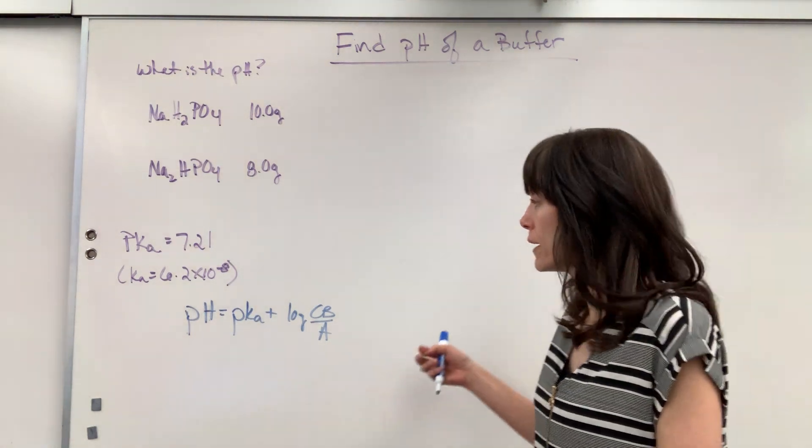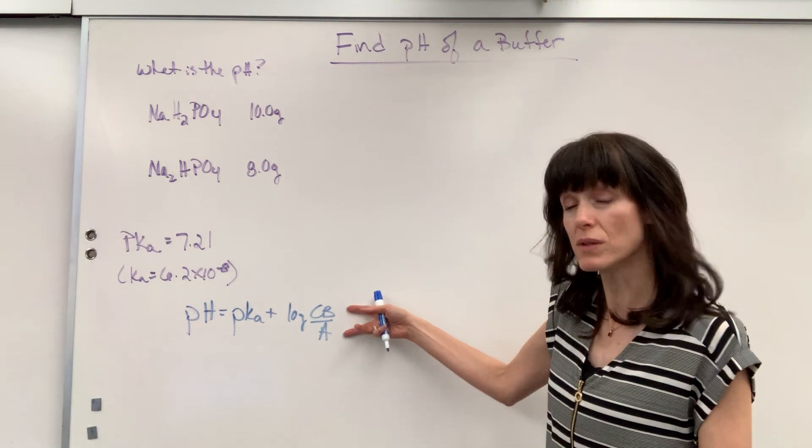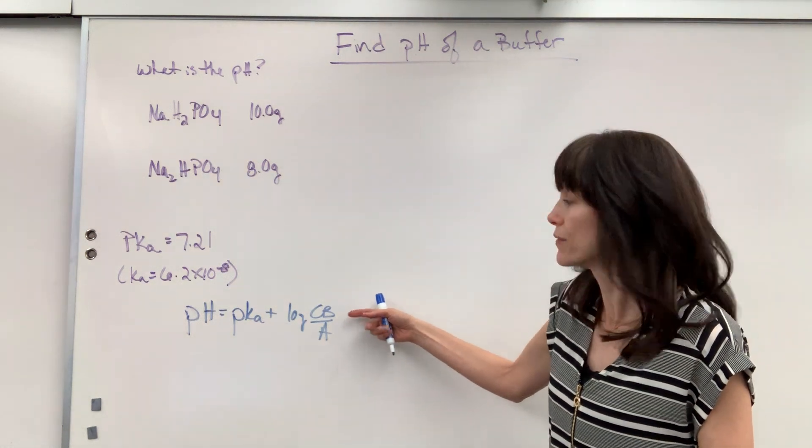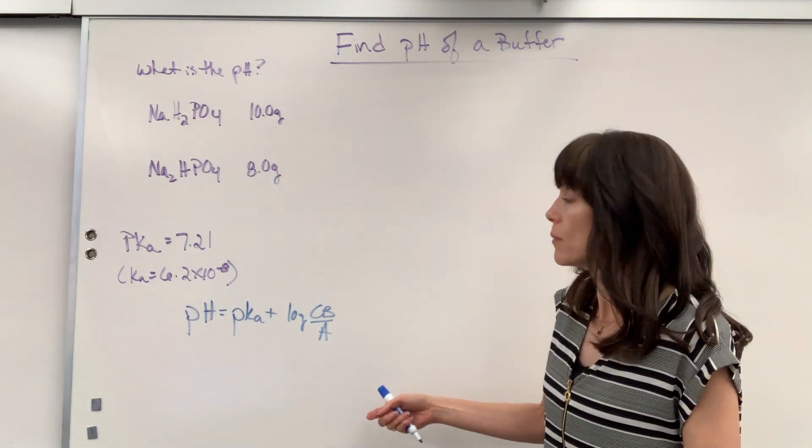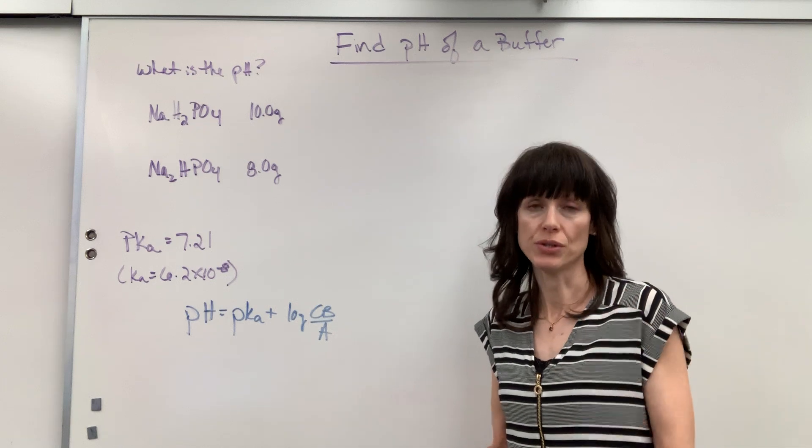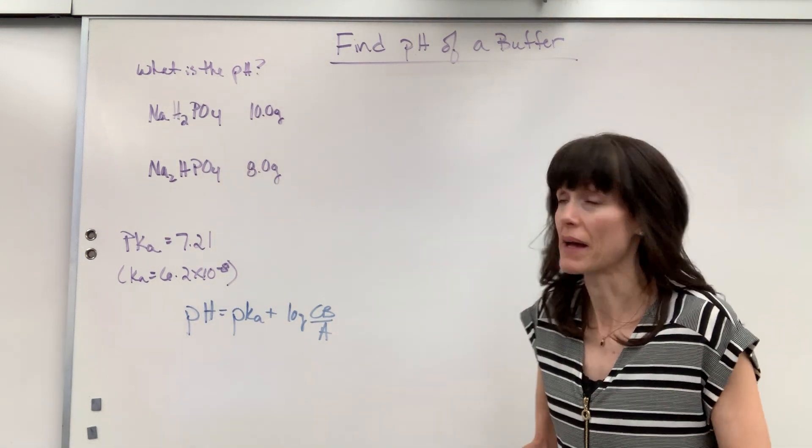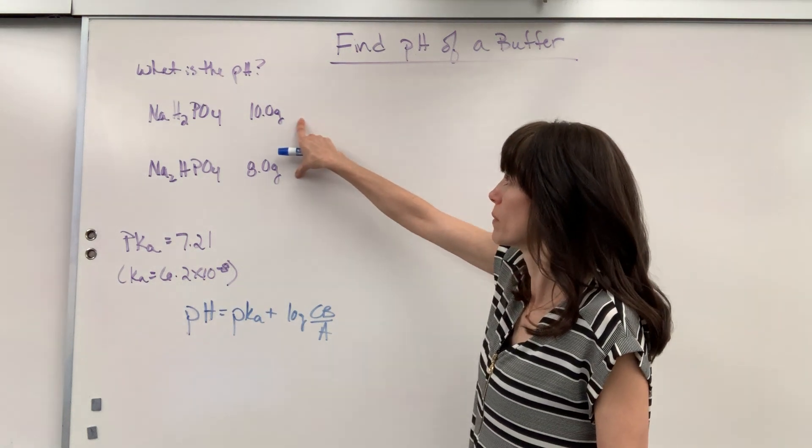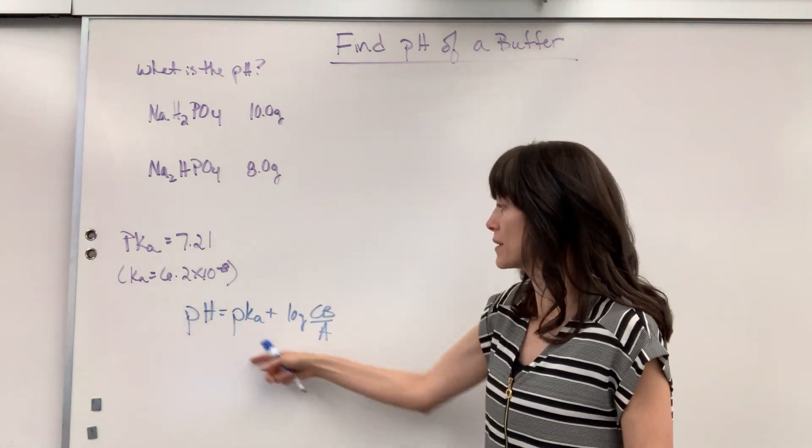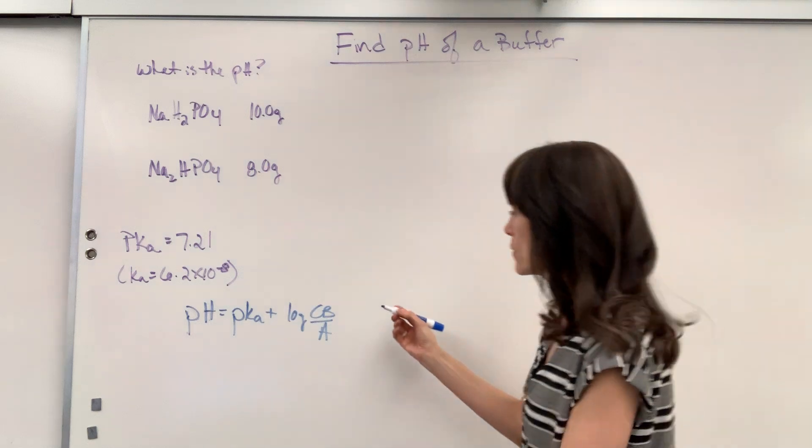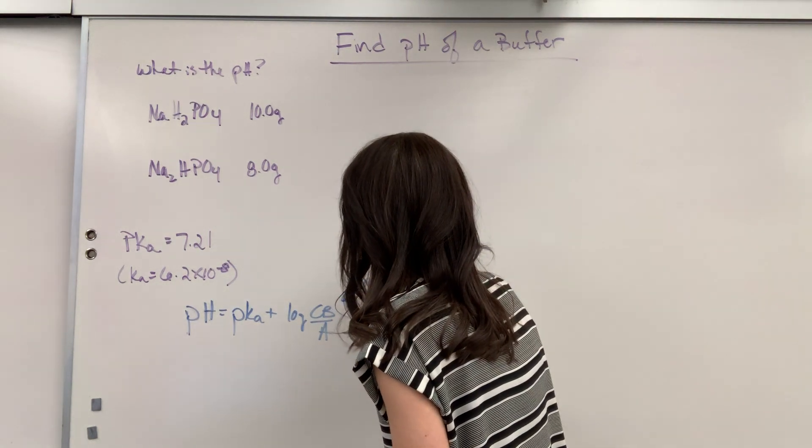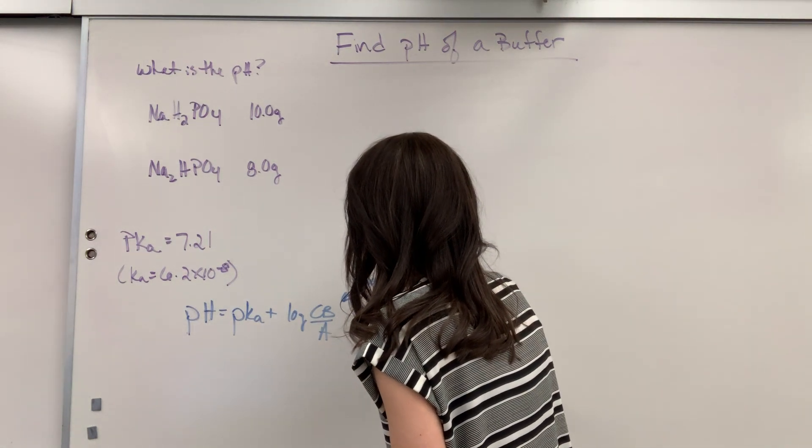Here's the deal. On Henderson-Hasselbalch you can either use moles or you can use molarity for conjugate base and acid. I try to use moles. I think it's a little bit easier. So this actually won't be bad at all. All I have to do is convert both of these to moles and then I'll have my three pieces of information.